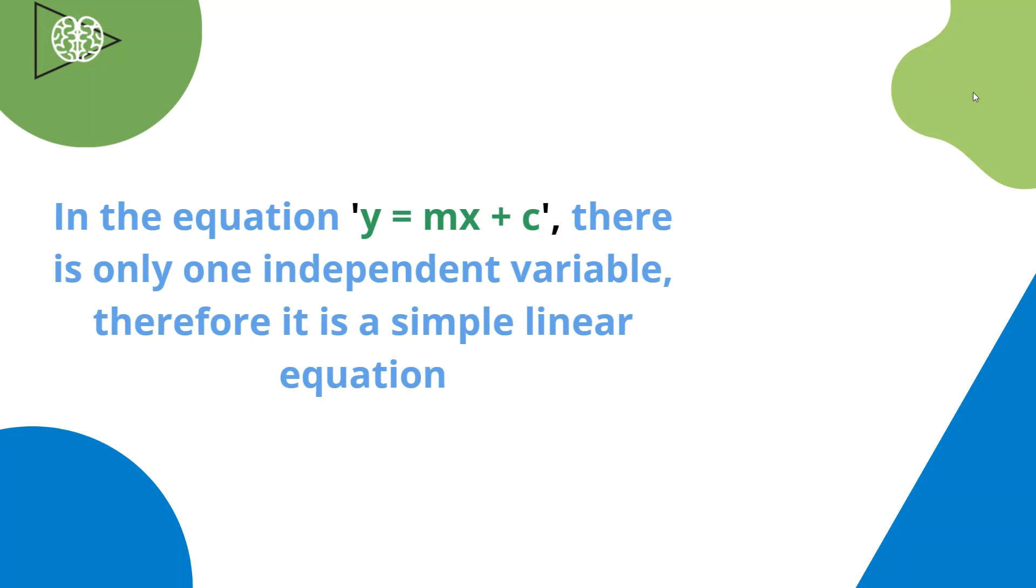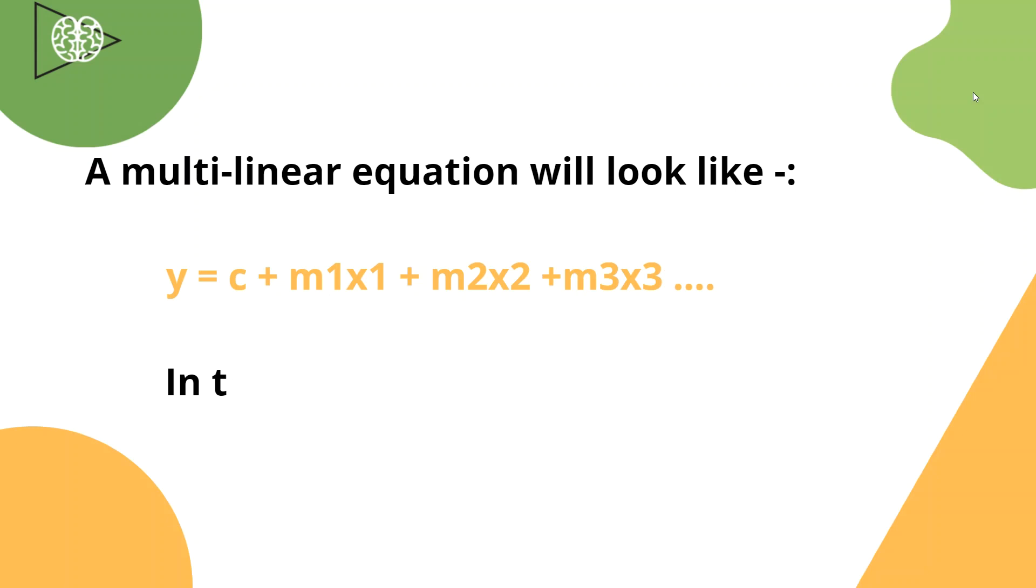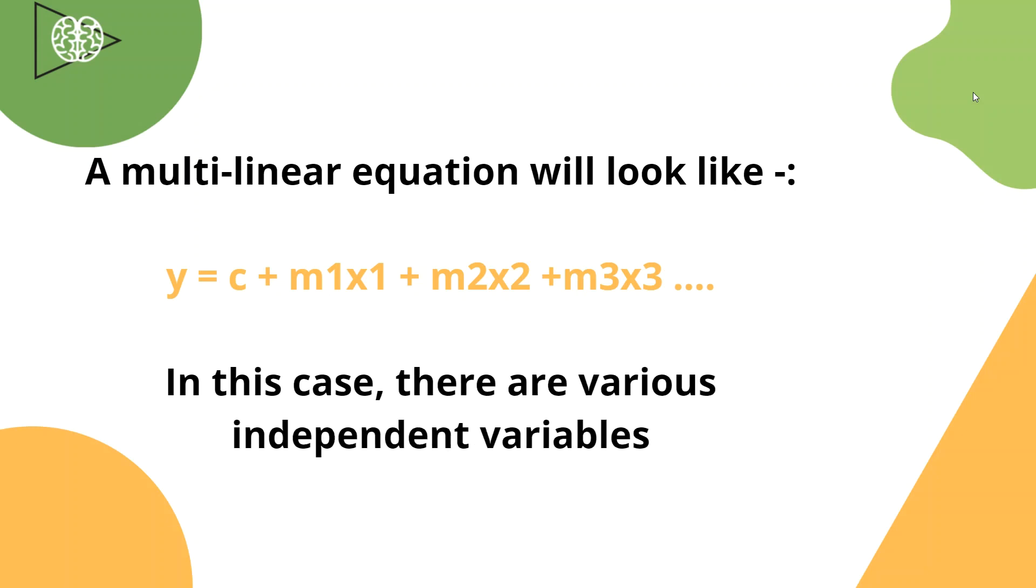So how would a multilinear equation look like? It will look like this: y equals c plus m1x1 plus m2x2 plus m3x3 up till mnxn. In this case, there are various independent variables.